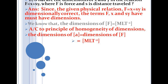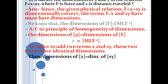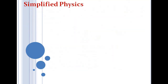Now let's find the dimension of y. Since x and sy must have identical dimensions — they are being added — the dimension of sy must equal dimension of x, which is MLT⁻². Since s is displacement with dimension L, we have L × [y] = MLT⁻². Cancelling L from both sides, the dimension of y must be MT⁻², giving us MLT⁻² overall. This is the end of the lecture.